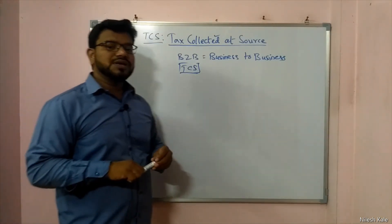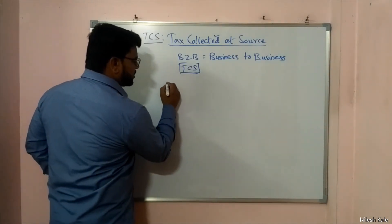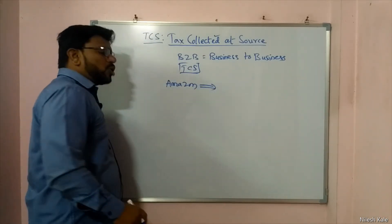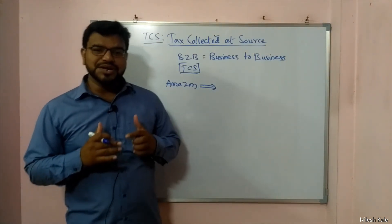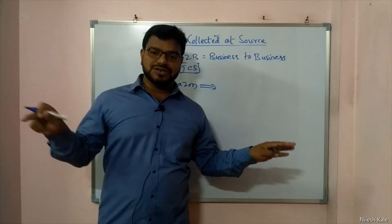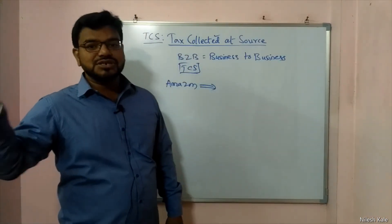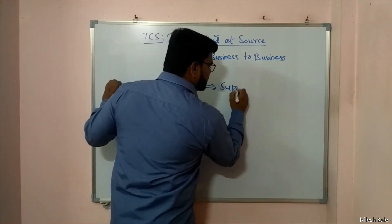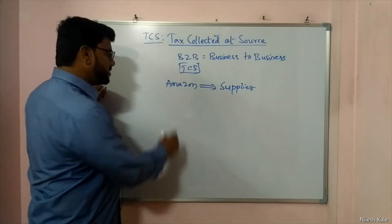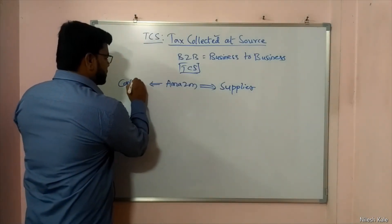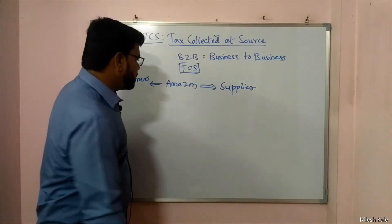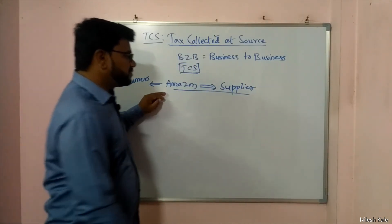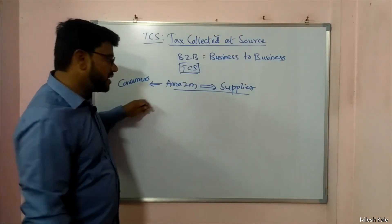Let me give you an example. You have a company like Amazon. Amazon is an e-commerce company and Amazon does not manufacture goods — it is an intermediary between the final consumer and the suppliers. Suppliers can be manufacturers, wholesalers, or retailers. From the supplier, Amazon takes the goods and diverts them to the consumers.